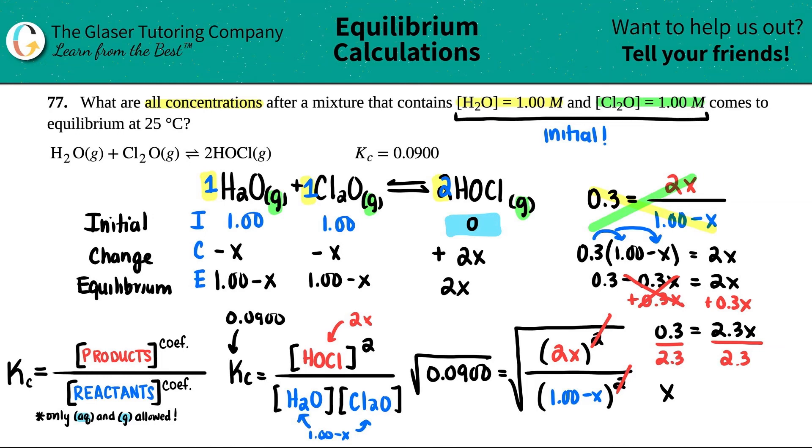Now we have 0.3 equals 2 plus 0.3x, which is 2.3x. Solving for x, divide by 2.3. 0.3 divided by 2.3 - I have three sig figs here, so my answer should have three sig figs - this is 0.130 molarity.